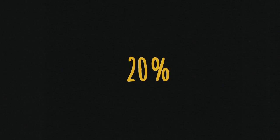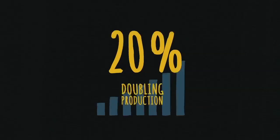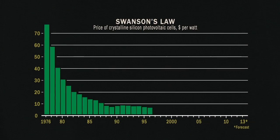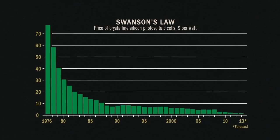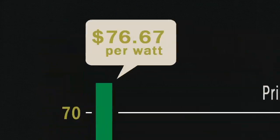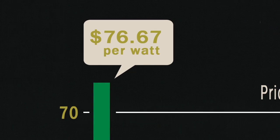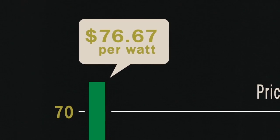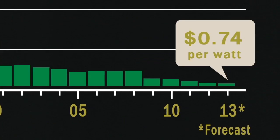20% might not seem like a lot, but if you keep doubling production, scaling up, the price of solar drops a ton. In 1976, solar electricity cost $76.67 per watt. In the past couple years, that number fell under $1.